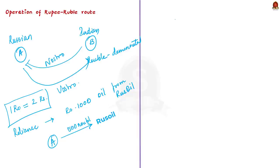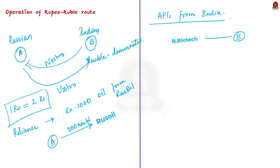Now take another scenario where a Nostro account is used. Assume the Russian government is importing pharmaceutical products from Bharat Biotech worth 500 rubles. The Russian government deposits 500 rubles in the Nostro account of Indian bank B, and Indian bank B in turn gives 1000 rupees to Bharat Biotech. So here you can see that we are only using rupee and ruble for the trade — we have bypassed the US dollar. This is how the rupee-ruble route will work.